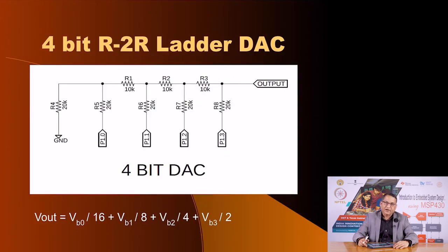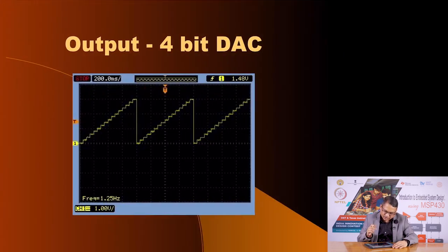Now instead of an 8-bit DAC you can have a 4-bit DAC, and now you see the frequency has improved also because the number of steps that you have - instead of 256 steps you have only 16 steps.